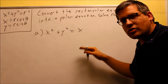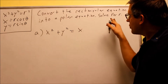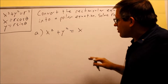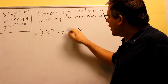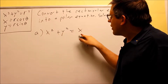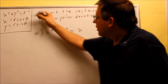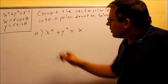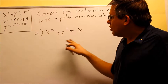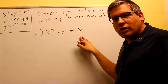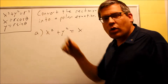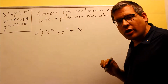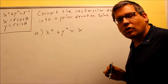Now we're going to convert rectangular equations into polar. This problem wants us to convert and then solve for r. The idea is to look at the formulas derived at the beginning of this section, and see what we can plug in to change all the x's and y's into r's and thetas. That's what we want — if we want a polar equation, we want only r's and thetas left over.